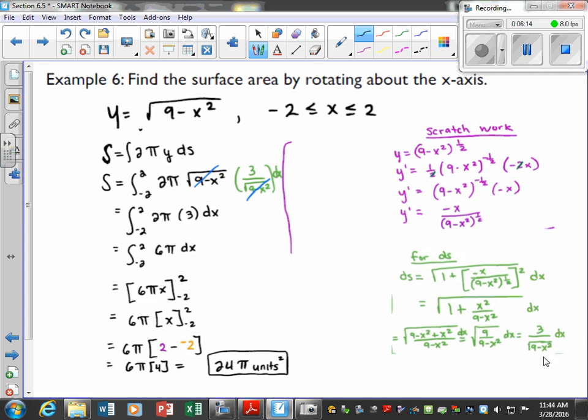So, this is my ds, so now I come back in place of ds, I plug that value in, and a real nice thing happens. So, this term will cancel with this term, and we're just left with 2π times 3 dx. Well, that simplifies to 6π dx, and this is very nice for us to evaluate.